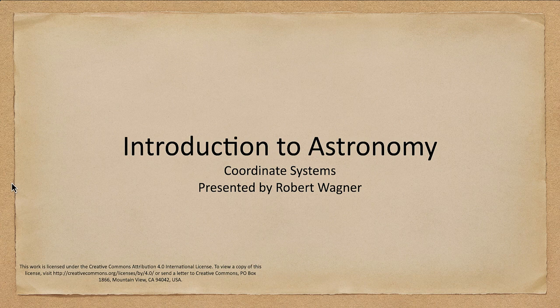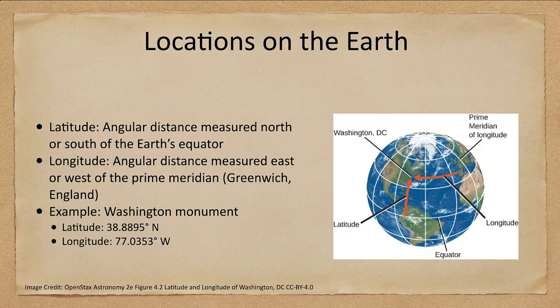Let's start off looking at how we measure things on Earth. You're probably familiar with the terms latitude and longitude. These are how we can determine the exact location of any object on Earth — latitude and longitude together give you a specific location.